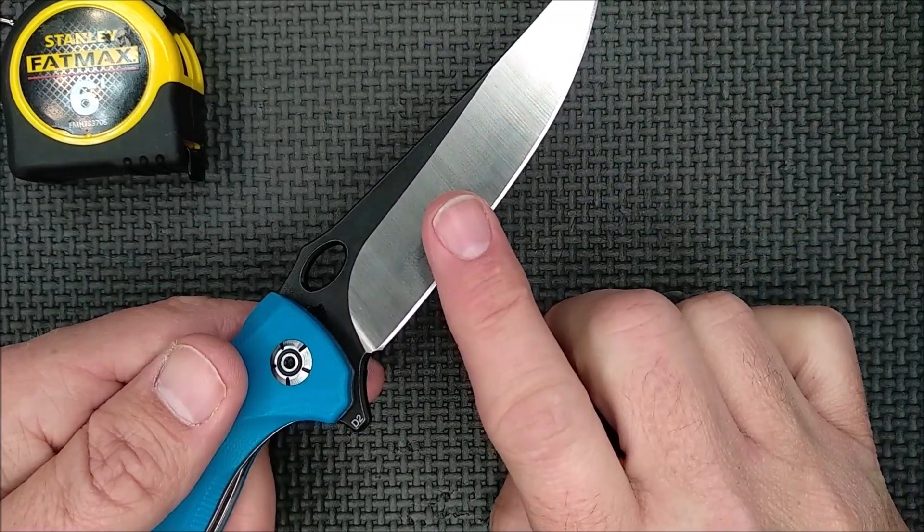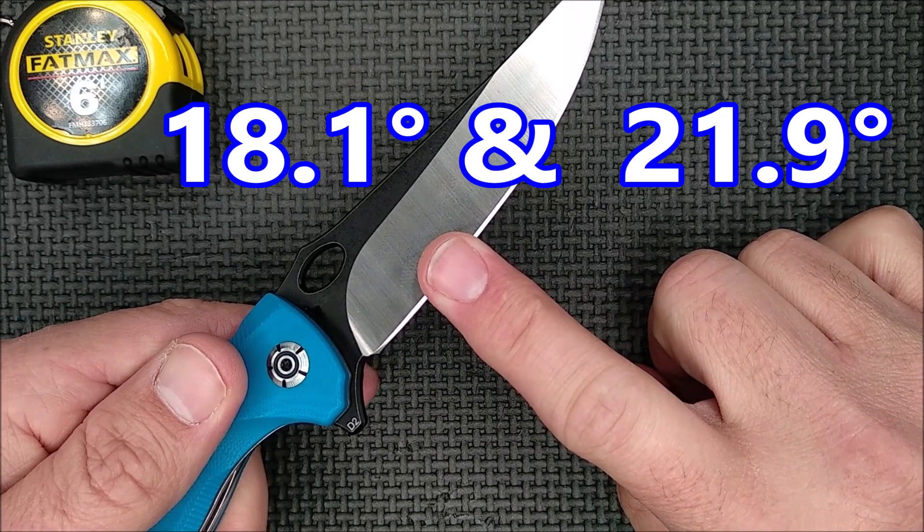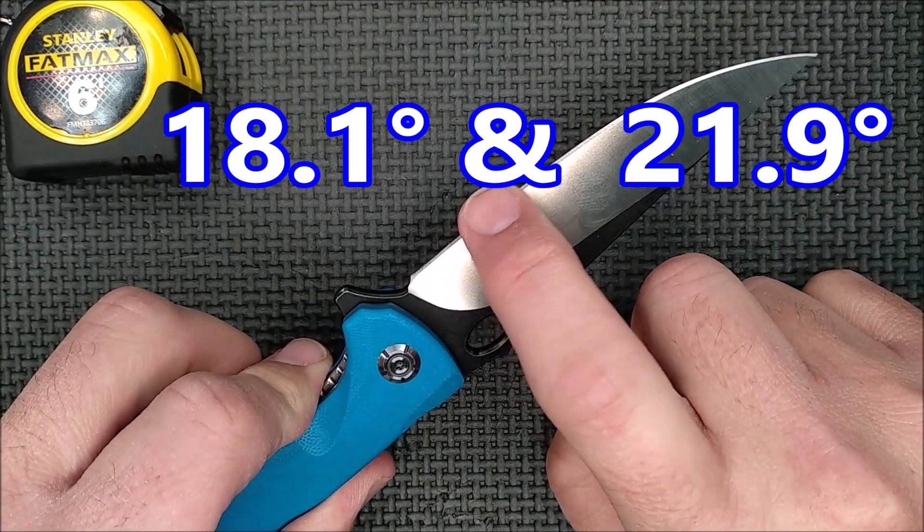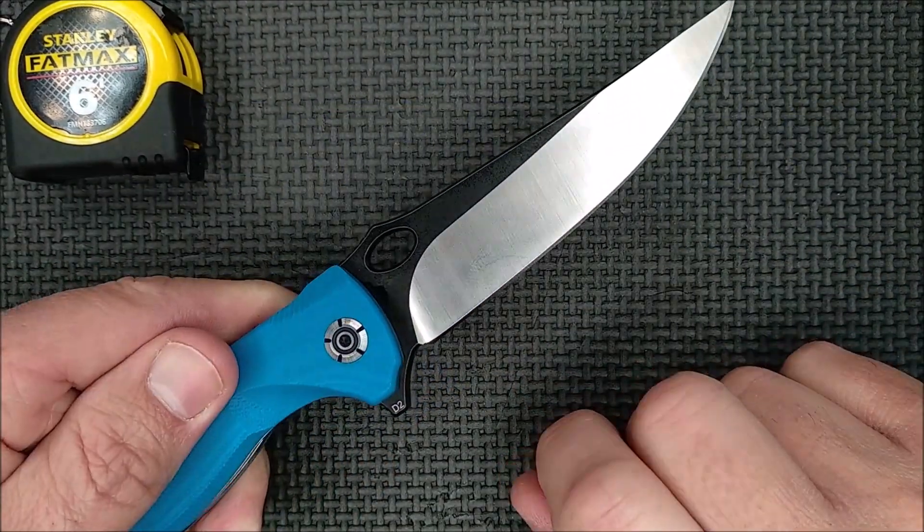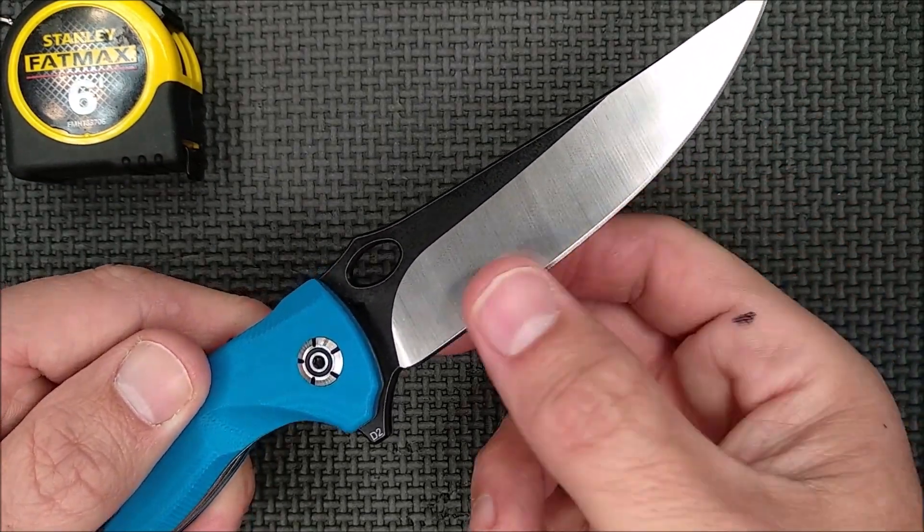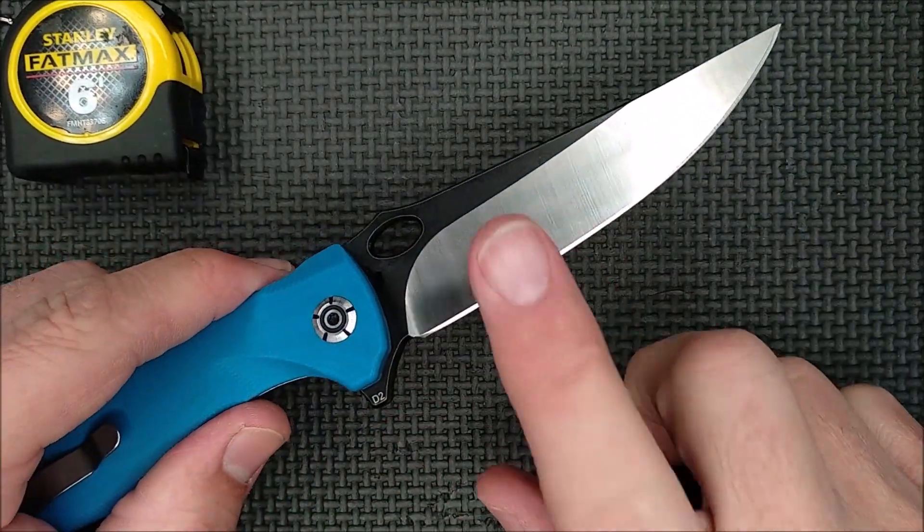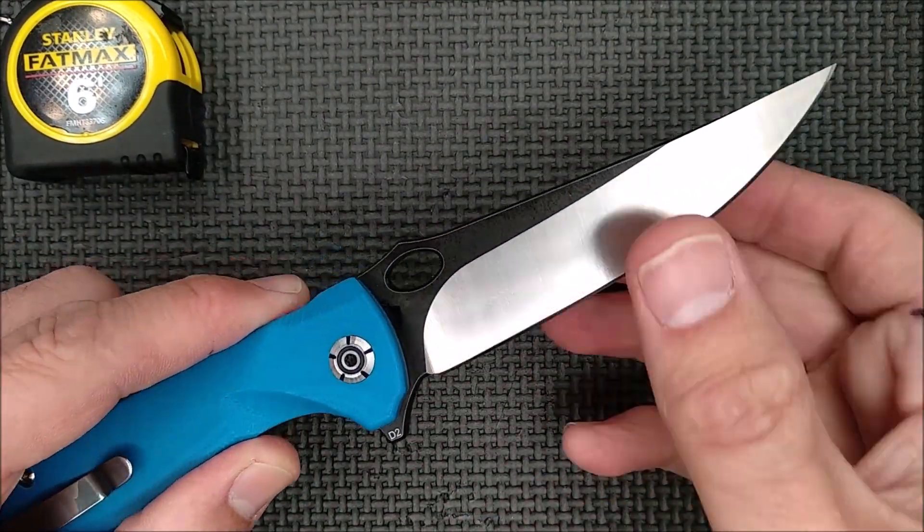The grind angle. The grind angle on one side at that one inch point, 18.1 degrees on one side, 21.9 degrees on the other. The edge angle varies along the blade a little bit, but not dramatically so. And with D2 steel, I would sharpen it up to 20 degrees per side.